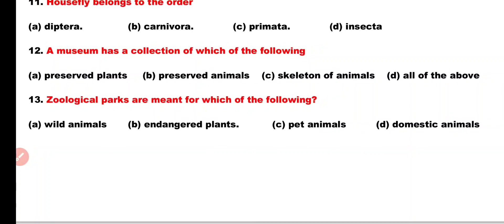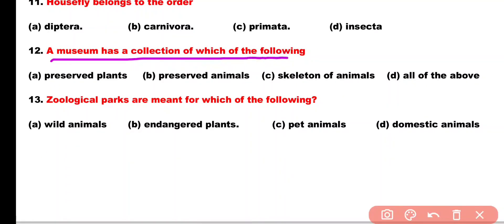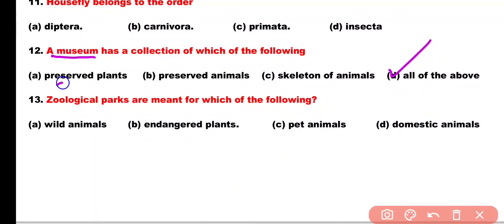Question number 12. A museum has a collection of which of the following? Option A: Preserved plants, Option B: Preserved animals, Option C: Skeleton of animals, Option D: All of the above. Correct answer is Option D. A museum has preserved plants, preserved animals, and animal skeletons — all three are present.